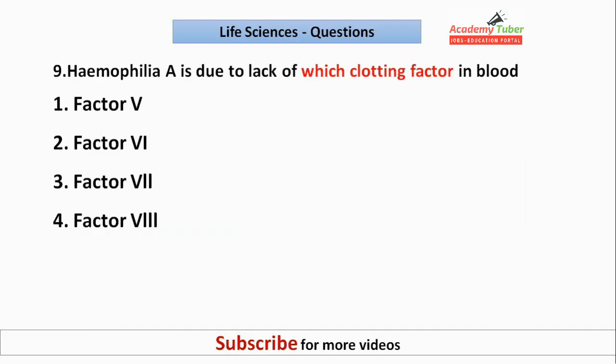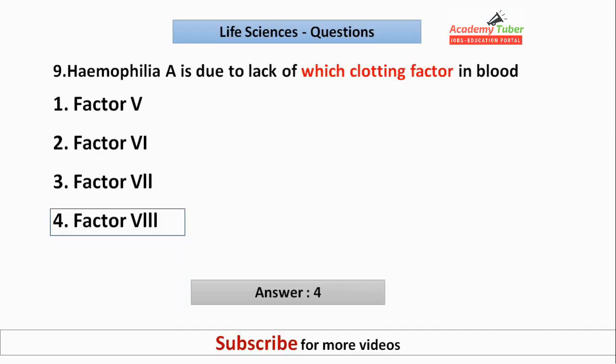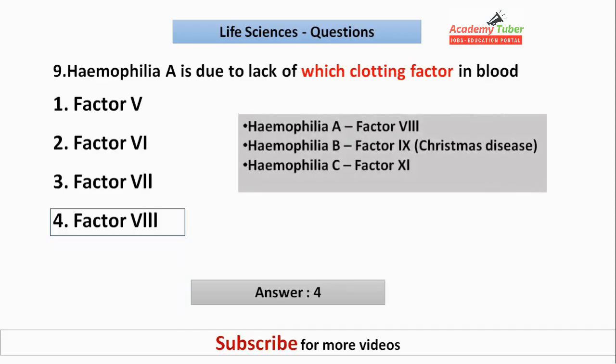Hemophilia A is due to lack of which clotting factor in blood? Hemophilia A is due to Factor VIII. Hemophilia B is due to Factor IX, also known as Christmas disease. Hemophilia C is due to lack of Factor XI.